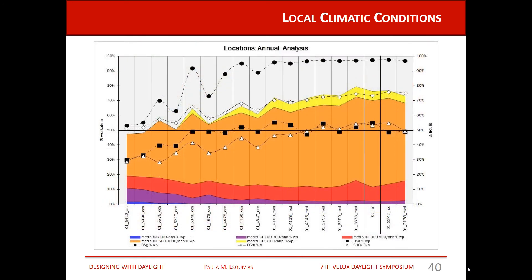Looking at this variation across annual data, we can see the performance of these parameters and the increase in every new metric. We can observe the increase in solar heat gains across locations, as well as the increase in the percentage of the space within each illuminance range, and also the decrease of the area with lower illuminances.